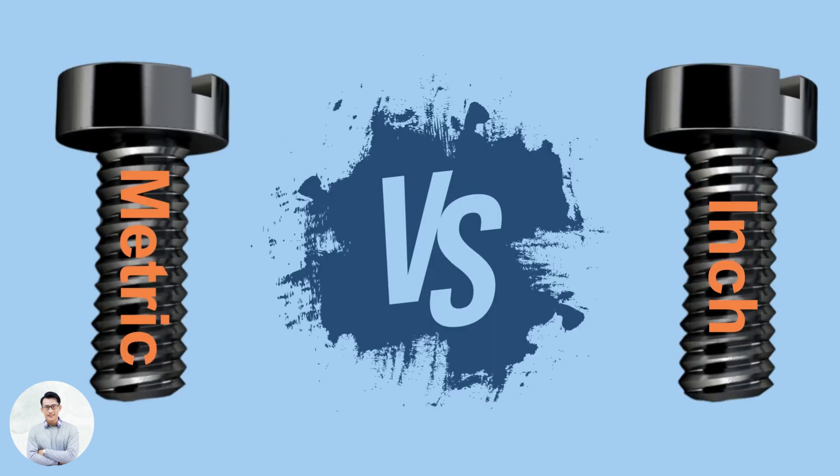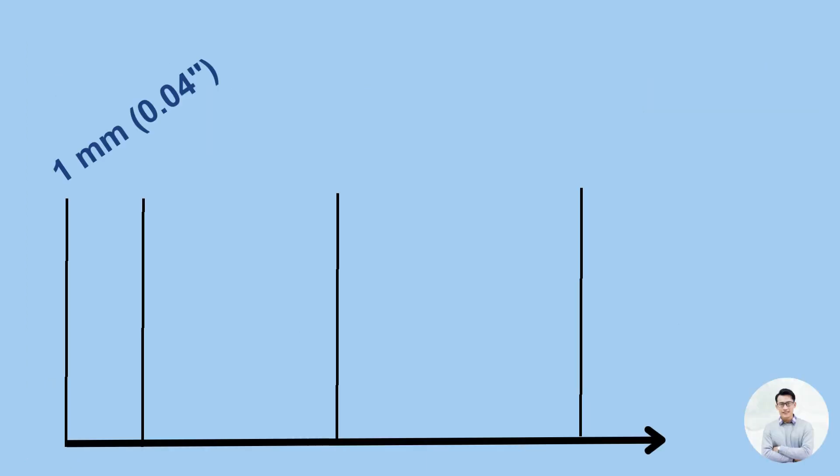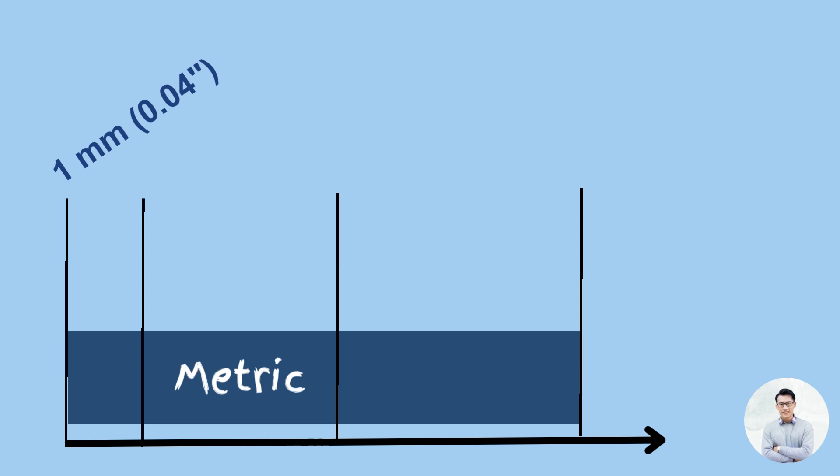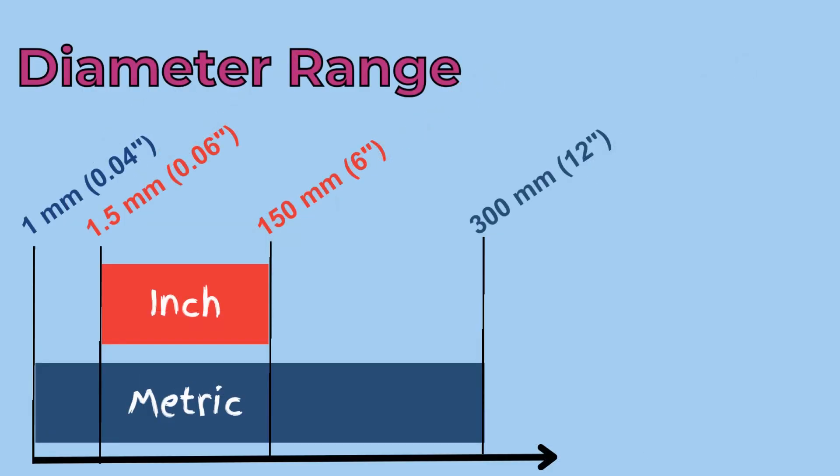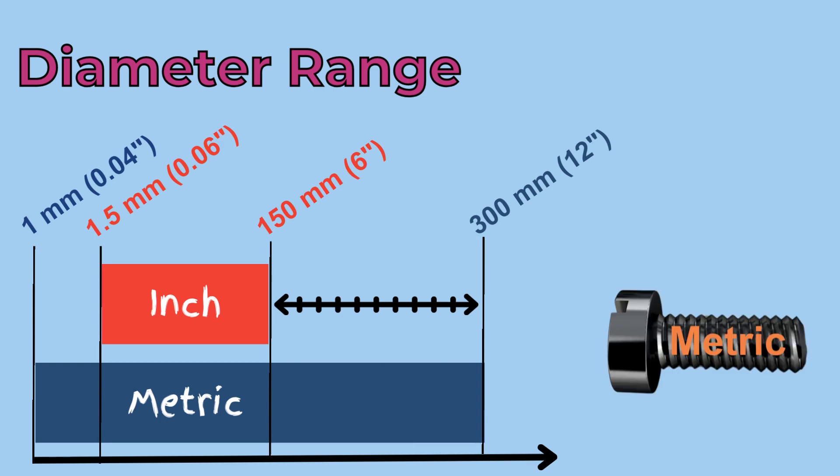Diameter Range. Metric threads are available in a wider range of diameters compared to standard inch threads. They start at 1 mm and go up to 300 mm. Standard inch threads, on the other hand, start at 1.5 mm and go up to only 150 mm. Therefore, if you require a thread with a diameter larger than 6 inches, your best option is to opt for a metric thread.